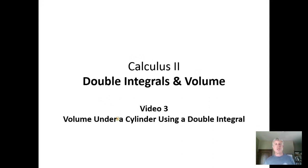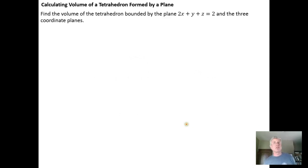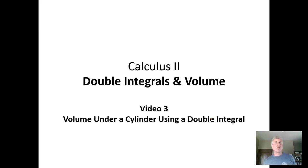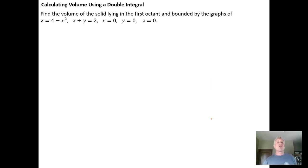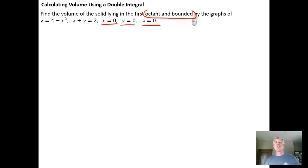In this video we're going to find the volume under a cylinder using a double integral. The problem says: find the volume of the solid lying in the first octant and bounded by the graphs z equals 4 minus x squared, x plus y equals 2, x equals 0, y equals 0, and z equals 0. These last three conditions are what force the first octant bounding, so there's a little redundancy in the given information.